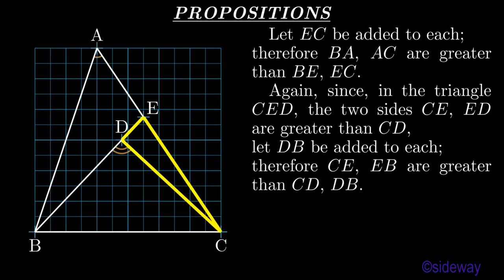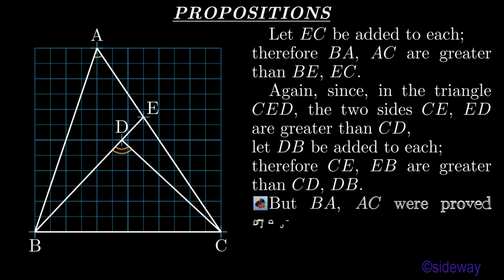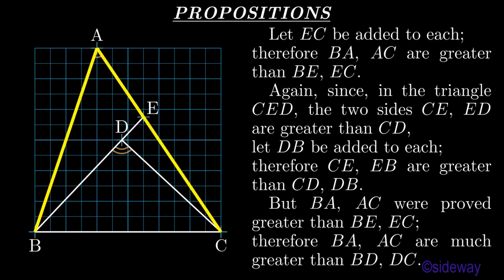Again, since in the triangle CED the two sides CE, ED are greater than CD, let DB be added to each. Therefore CE, EB are greater than CD, DB. But BA, AC were proved greater than BE, EC. Therefore BA, AC are much greater than BD, DC.